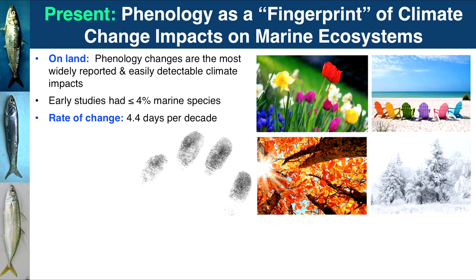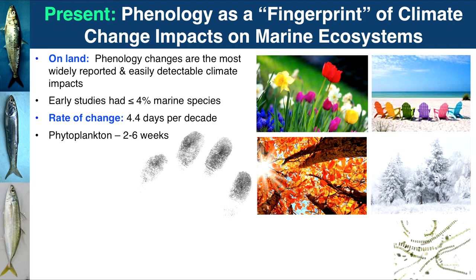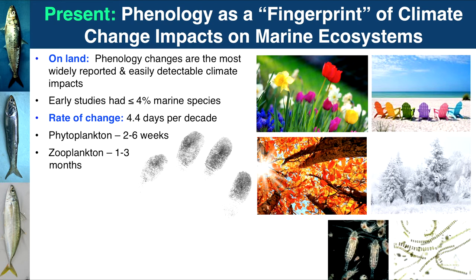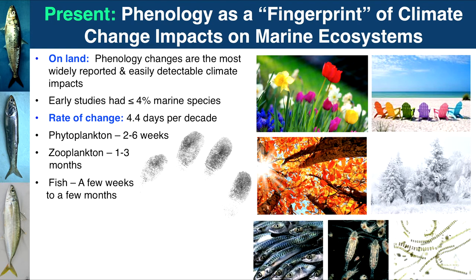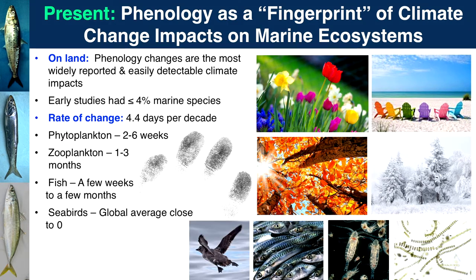We've also been studying how this happens at the organismal level. These are amounts of change and variations in phenology for different groups of marine organisms. All these rates of change are different among organisms — they're not changing at the same rate — which means things that were once aligned might become unaligned, destructuring how ecological interactions occur.